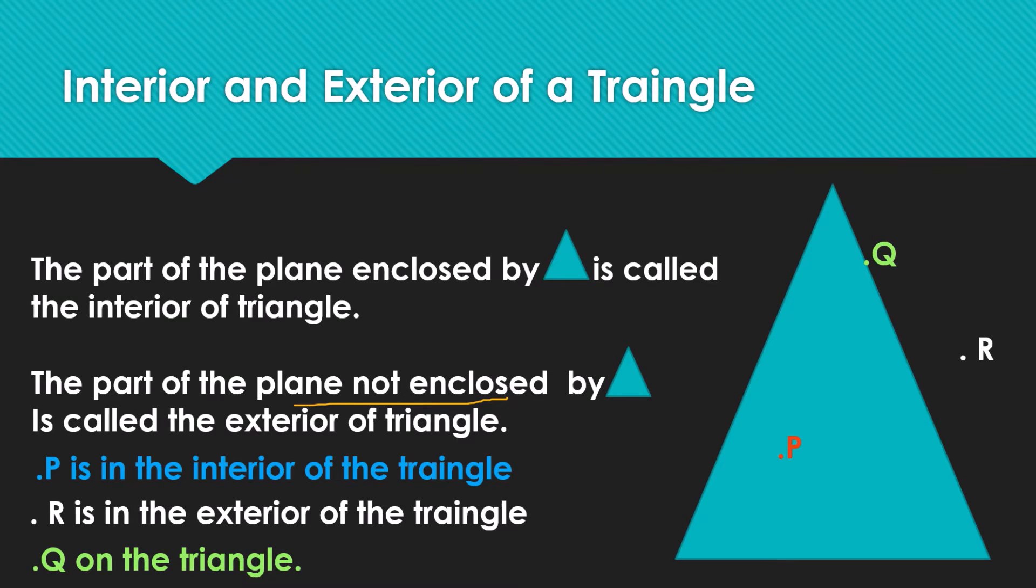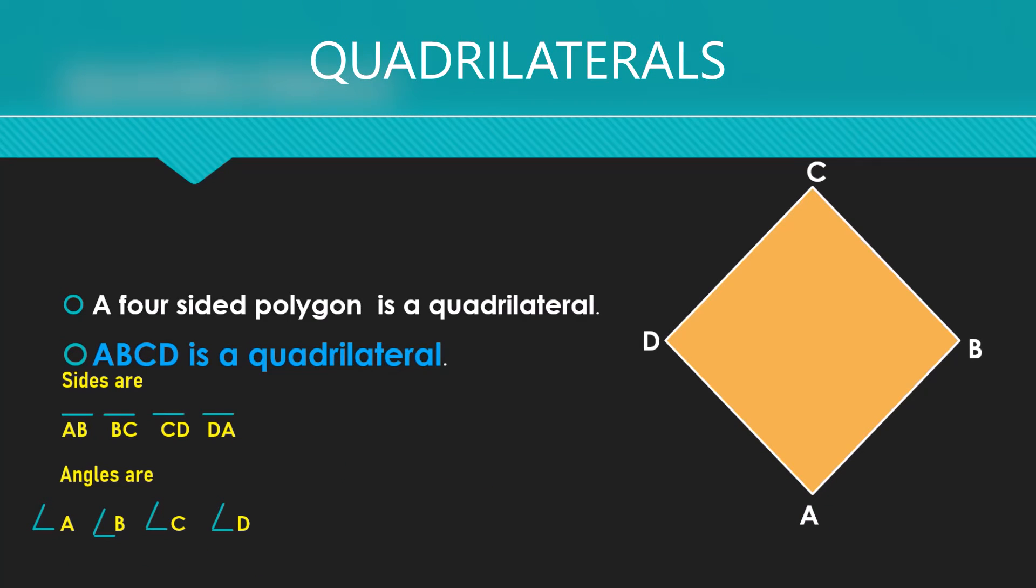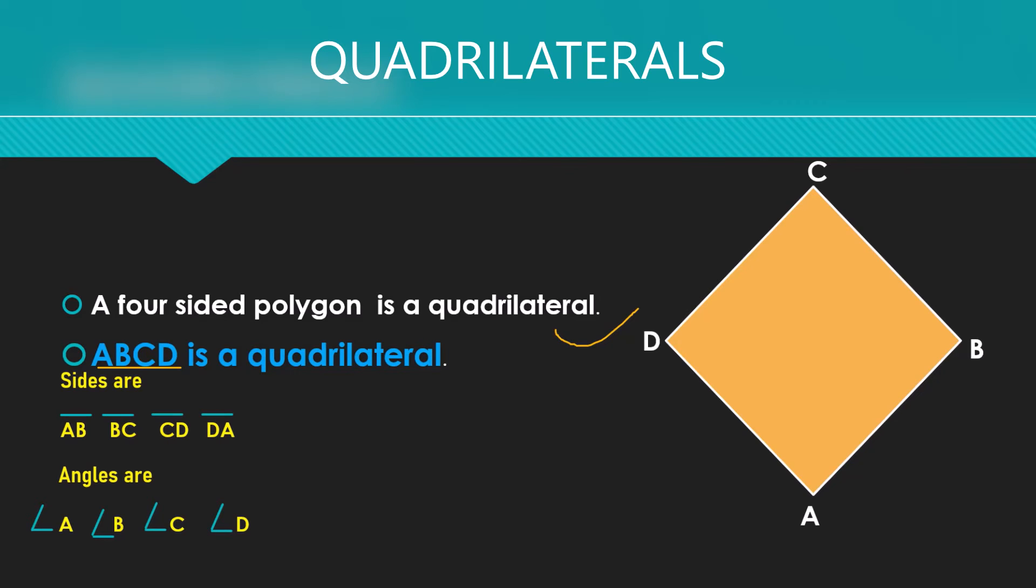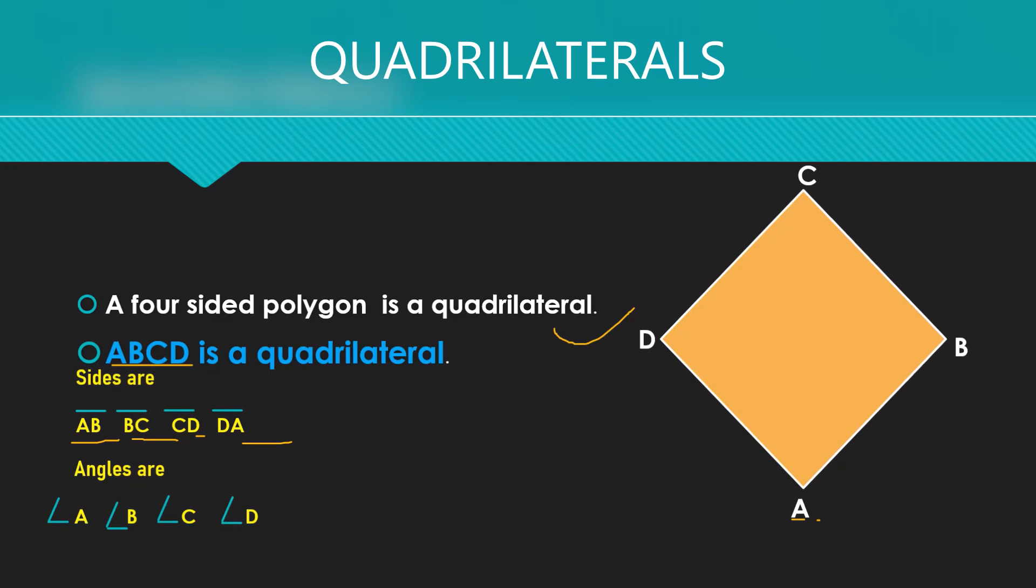Our next topic is quadrilateral. A quadrilateral is a four-sided polygon. From the figure we can find ABCD is a quadrilateral. We always name it in cyclic manner like A, B, C, D. The sides are AB, BC, CD, and DA. The angles are angle A, B, C, D. So we have four sides and four angles in a quadrilateral.